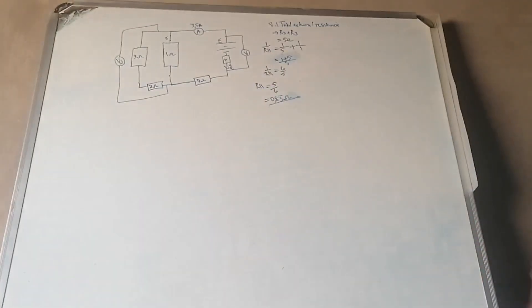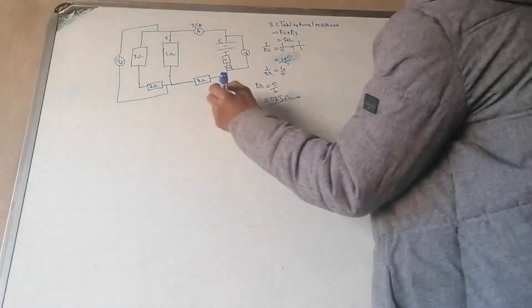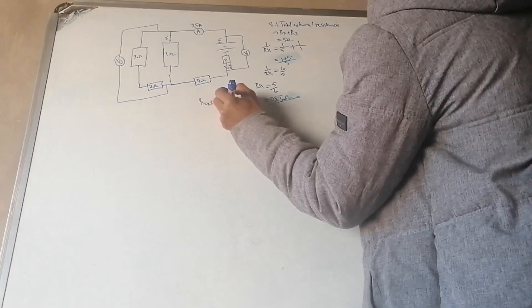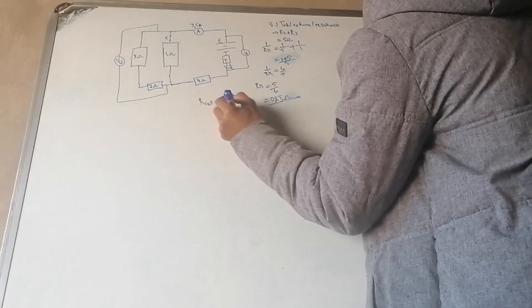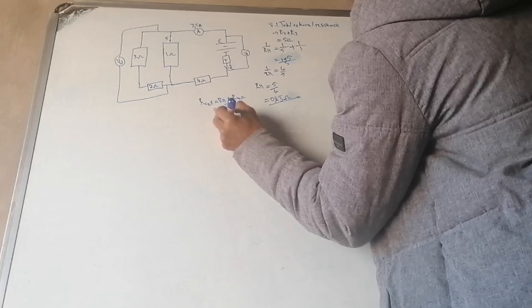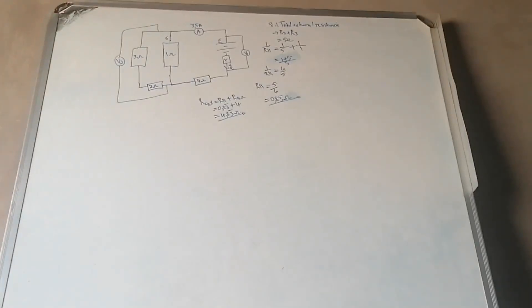Remember that 0.83 ohms was just our parallel combination, but that whole parallel section is in series with the 4 ohm resistor. So R_external = R_parallel + 4 = 0.83 + 4 = 4.83 ohms. This is the total resistance of the external circuit.